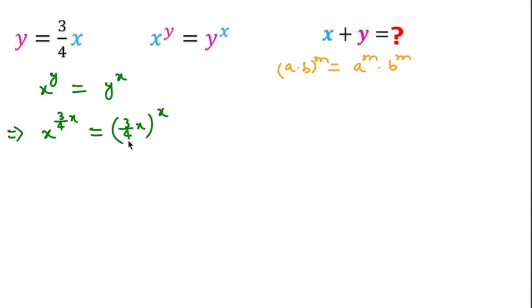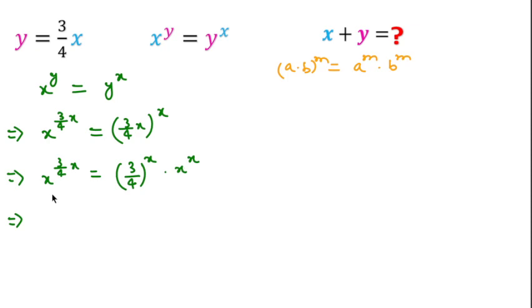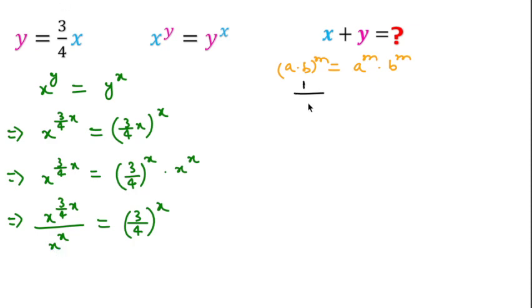Using the exponent rule — where a into b to the power m equals a to the power m times b to the power m — with 3 over 4 as a and x as b, we can write x to the power 3 over 4x equal to 3 over 4 to the power x times x to the power x. Moving x to the power x to the left side gives x to the power 3 over 4x divided by x to the power x, which equals 3 over 4 to the power x. Using the rule 1 over a to the power m equals a to the power minus m, we can write x to the power 3 over 4x times x to the power minus x equal to 3 over 4 to the power x.